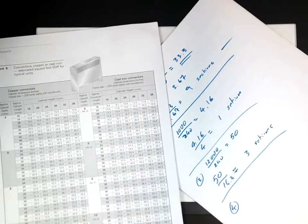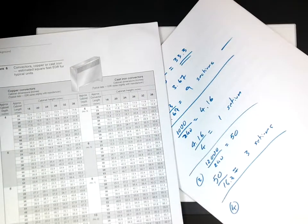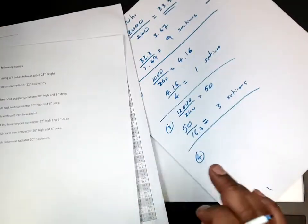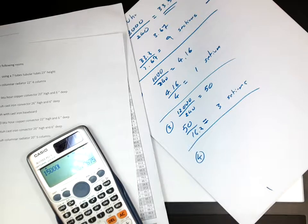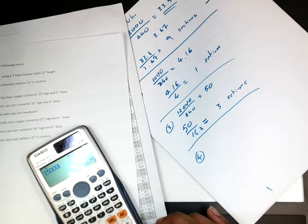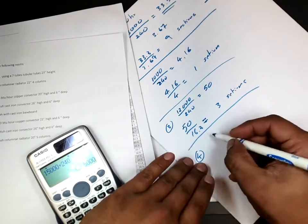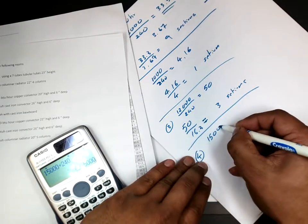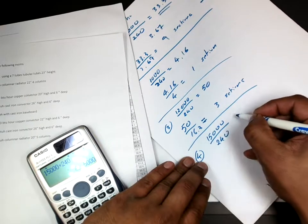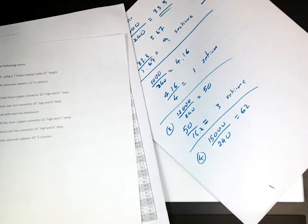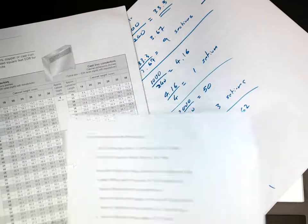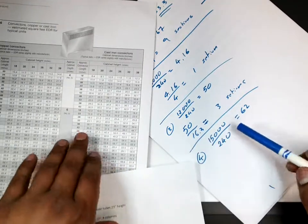Four. Again, the same thing. One. Repetition. 15,000. 15,000 over 240. So I got the...